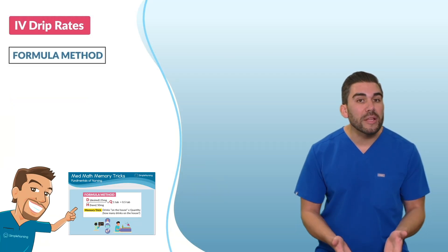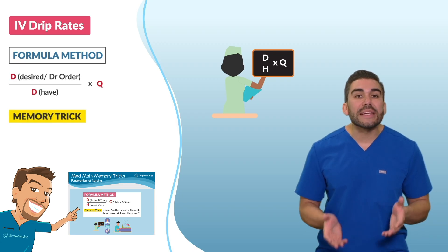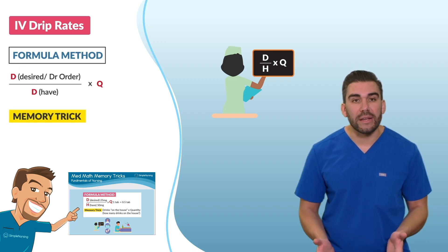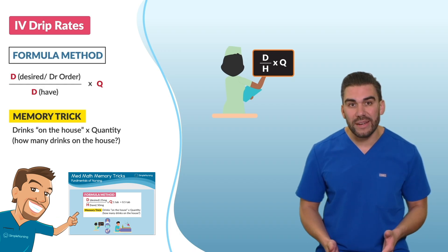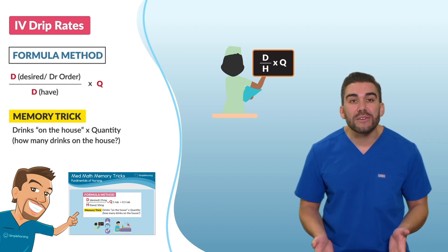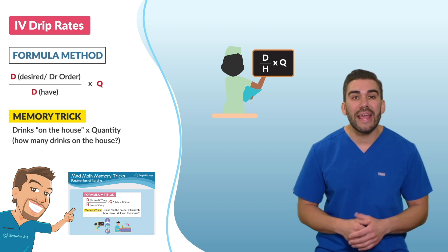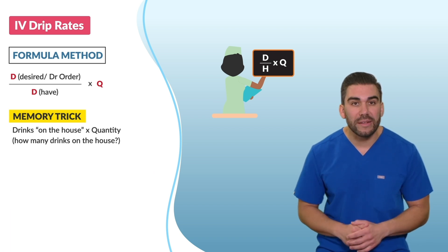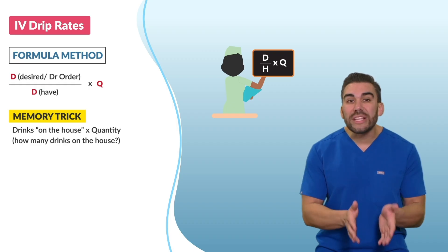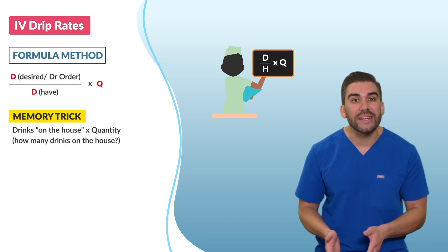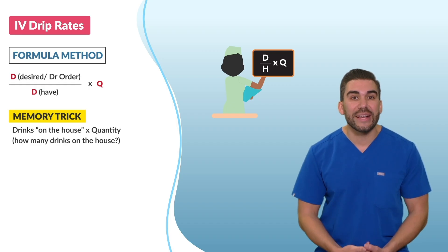Now let's review the formula method for dosage calculations, also called MedMath. Use the memory trick: D over H times quantity — I call it 'drinks are on the house times the quantity.' D is for the desired dose or doctor's order, over what you have on hand, times the quantity. You have to know this for your exit exam. Now let's go over some practice questions that you could see on your exit exam.